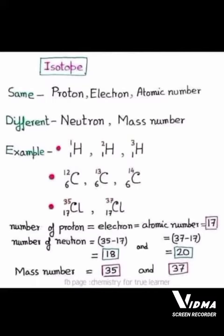Third one is chlorine-35 and chlorine-37. Both chlorine-35 and chlorine-37 have the same number of protons, electrons, and atomic number.